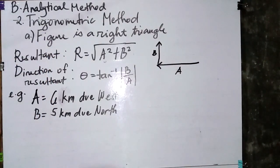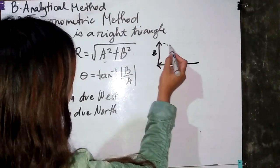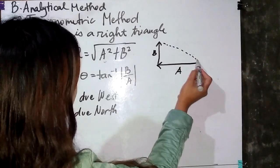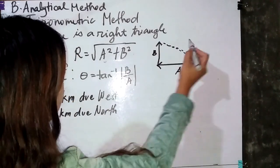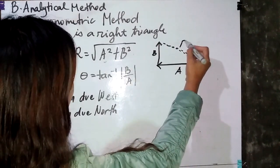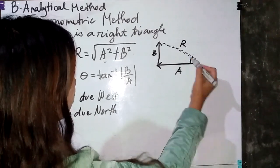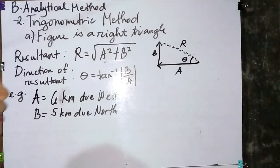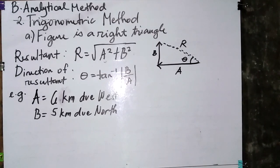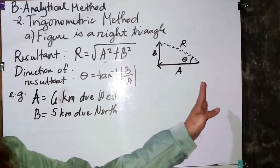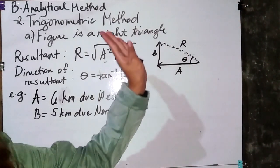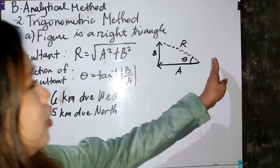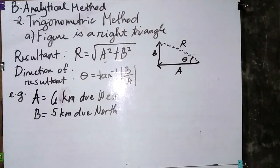Using the polygon method, head to tail, we connect the vectors. This is our resultant, and the direction of our resultant is obviously north of west — going from west toward north.